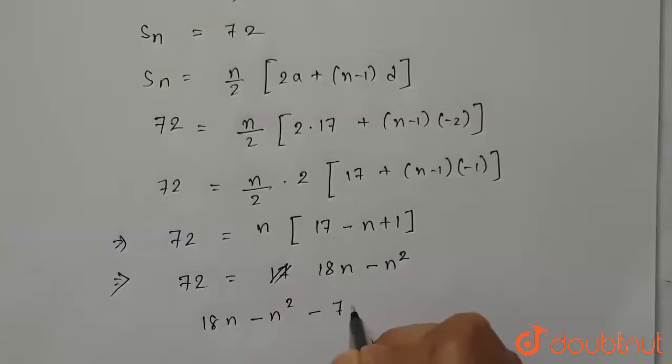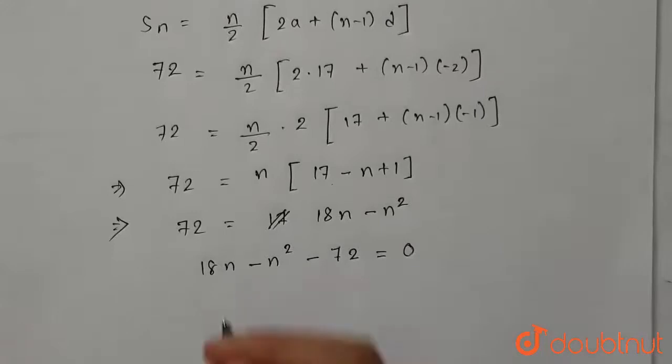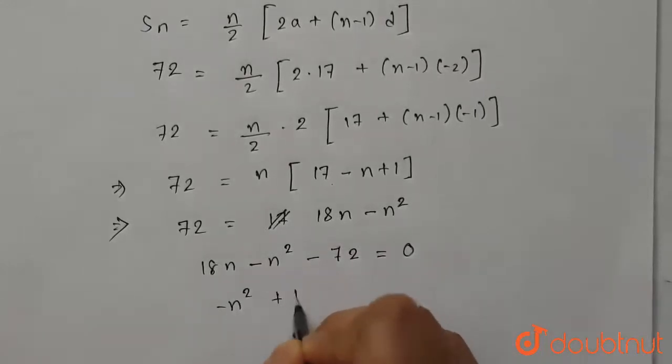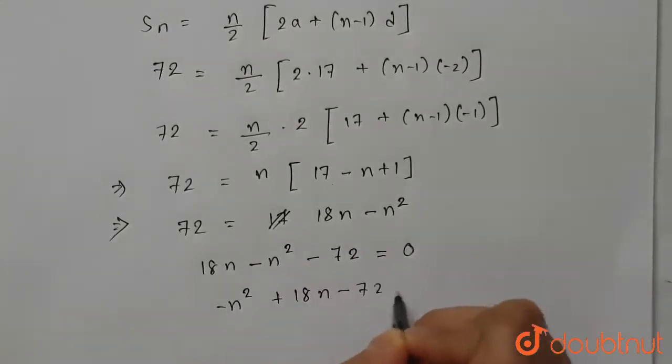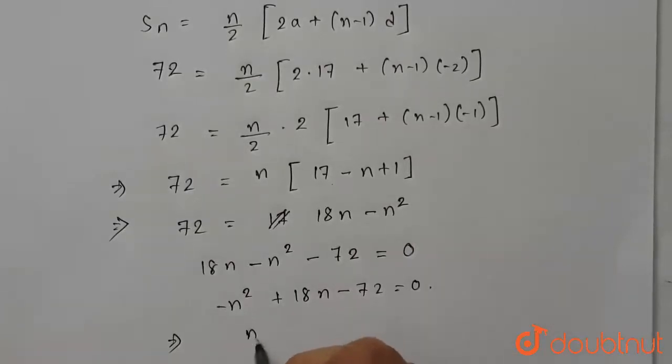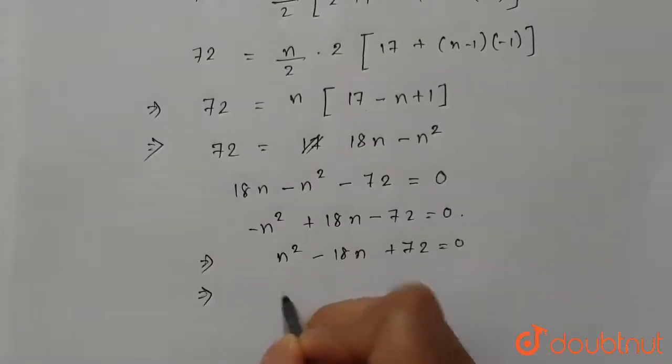So if we rearrange then we get -n² + 18n - 72 = 0, or if we take minus common then we get n² - 18n + 72 = 0.